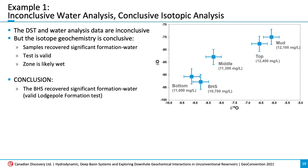So to summarize, both the DST and the water analysis data are inconclusive, but the isotopic analysis completed on the well is conclusive. We can see from the figure on the right that the deuterium or hydrogen versus oxygen isotope values are significantly different from the drilling mud in the upper right-hand corner compared to the bottom hole sample in the bottom left-hand corner, with the top sample being less representative than the bottom DST sample as we would expect. In conclusion, the samples did recover significant formation water, the test is in fact a valid Lodgepole formation test, and the zone is likely wet. This example demonstrates that even in a conventional setting, isotopic analyses provide very valuable information for better understanding formation waters.